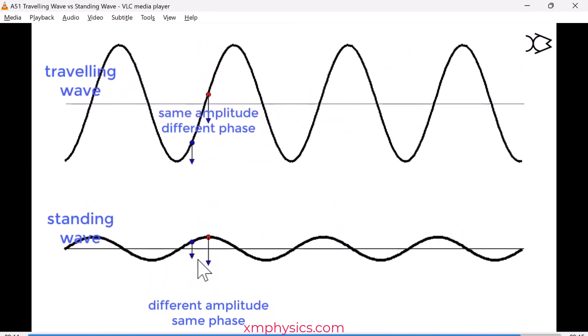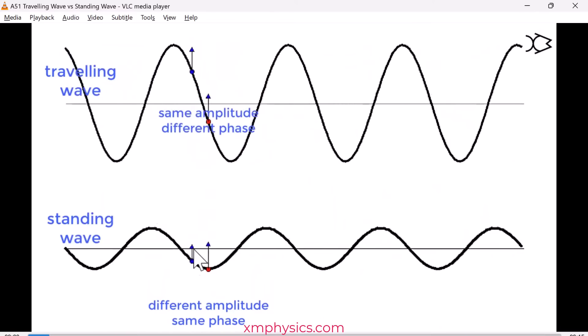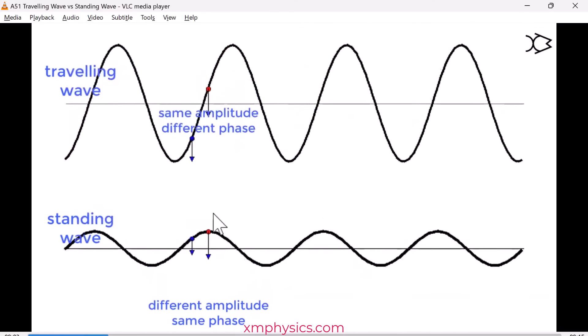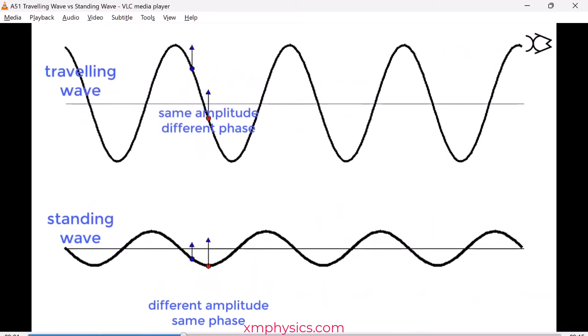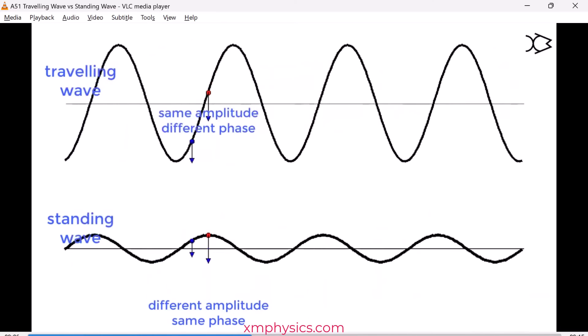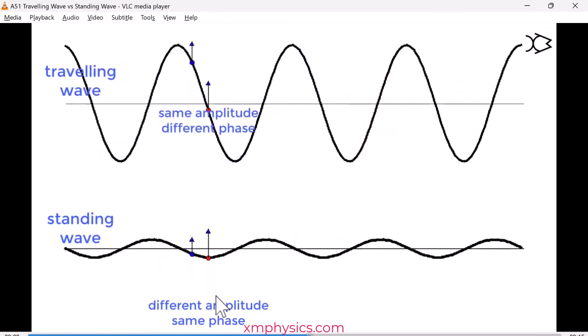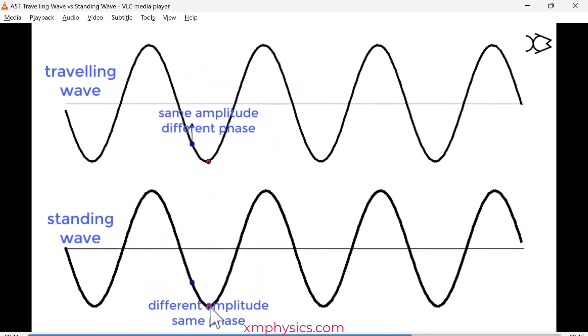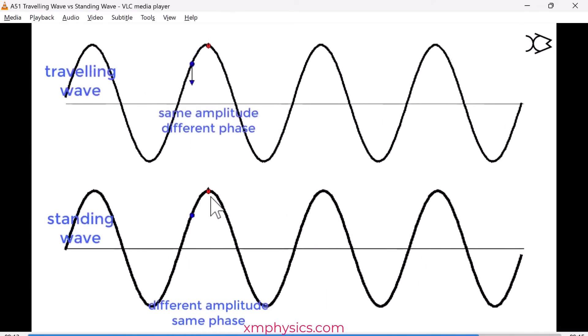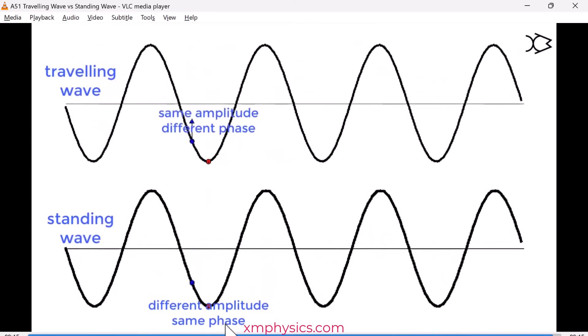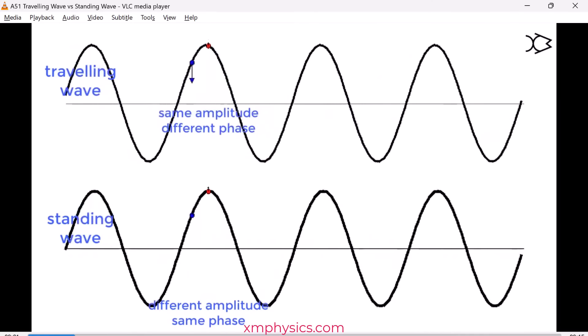Now what about the standing wave? How would you describe the phase relationship between the blue oscillation and the red oscillation? Does it look like they're completely in phase? They reach the peak together, they cross the zero together, reach the bottom together, cross together, hit the peak together, cross together. They're doing everything exactly in step.